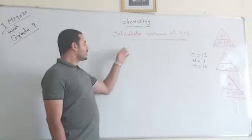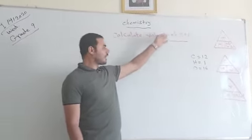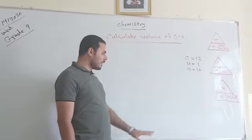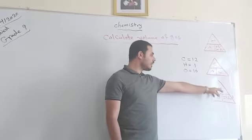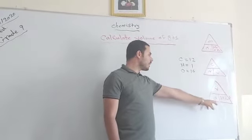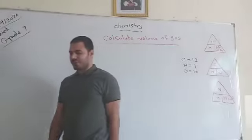Now let us turn to calculating the volume of gas. If you want to calculate the volume of gas, you can use this triangle: V equals N times 24.